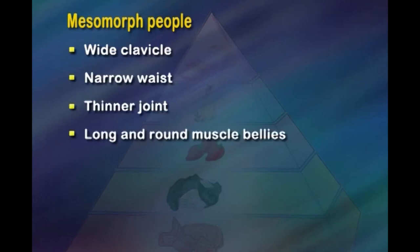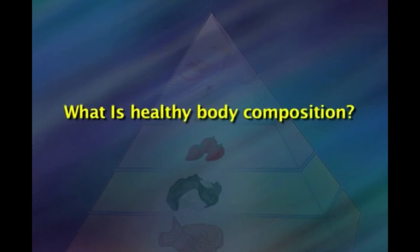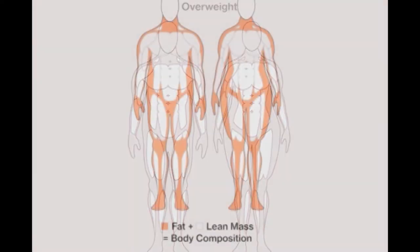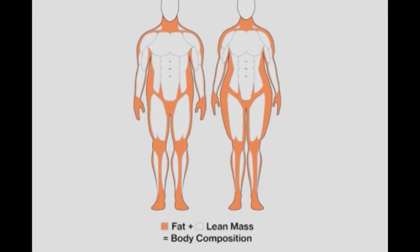A healthy body composition means having a body fat percentage within the normal range. If someone is overweight or obese, they have an excessive amount of body fat and a very high body fat percentage.